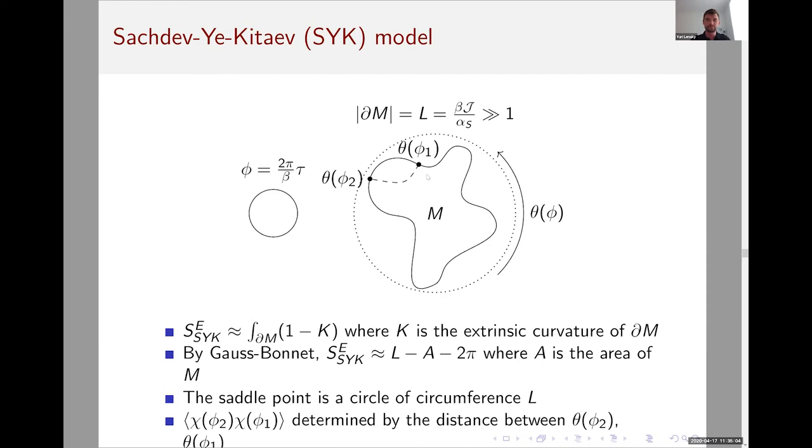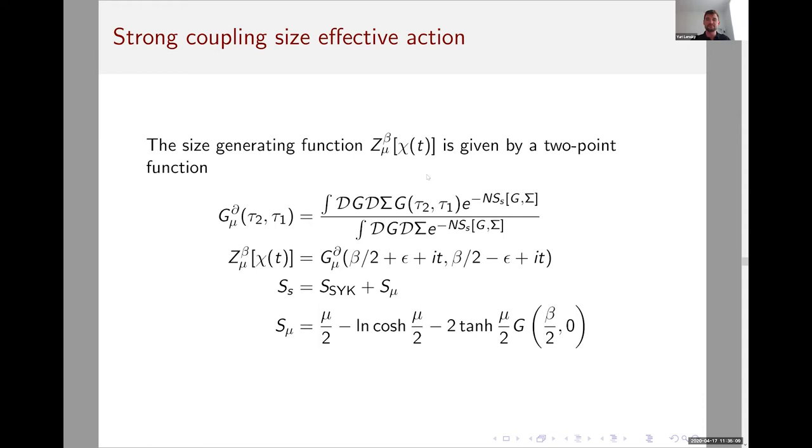The size generating function is given by a two-point function. I won't go through the derivation. It's a little bit hairy, but it's not particularly complicated. For the sake of completeness, this is the two-point function that we compute. This is the exact relationship to the size generating function. This is the action. There's the SYK piece of the action and a part of the action that comes from the presence of our number operator multiplied by mu. This is the contribution, but I will explain what it does on the next slide. This is the basic quantity that we will be computing that gives us the size of the SYK fermion.